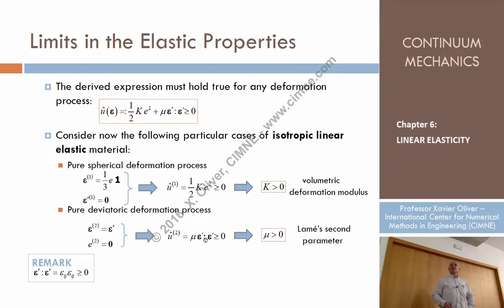This is a scalar. One tensor, double dot, the same tensor, is always a positive value. Why? Because the double dot of one tensor times the same tensor is just taking every component of the matrix and squaring it and summing them up. Epsilon one one squared, plus epsilon one two squared, plus epsilon one three squared, et cetera.